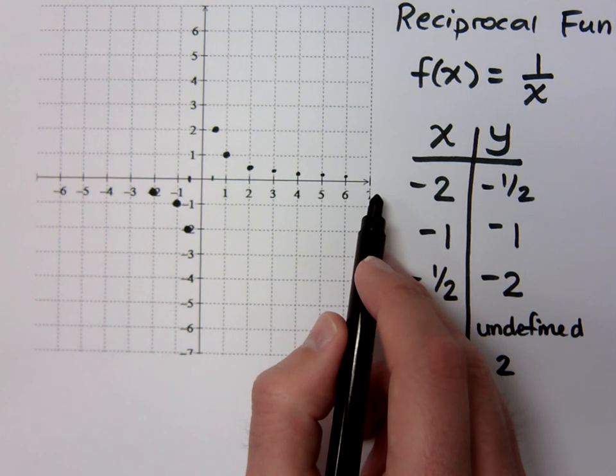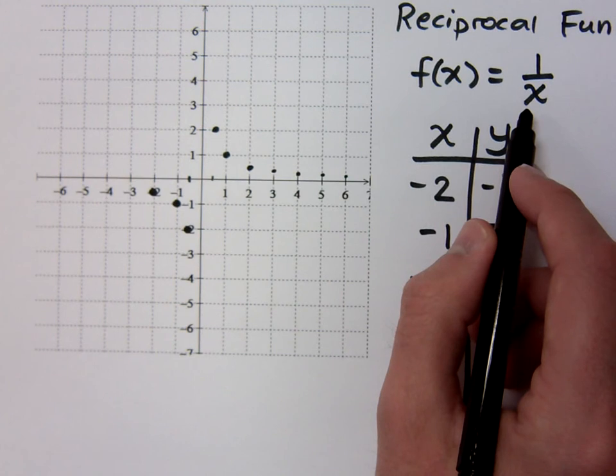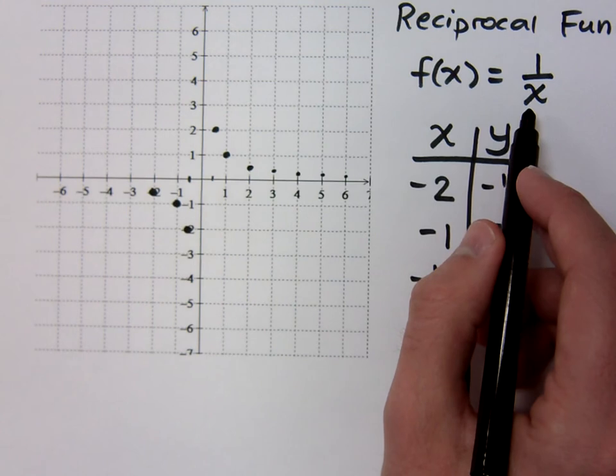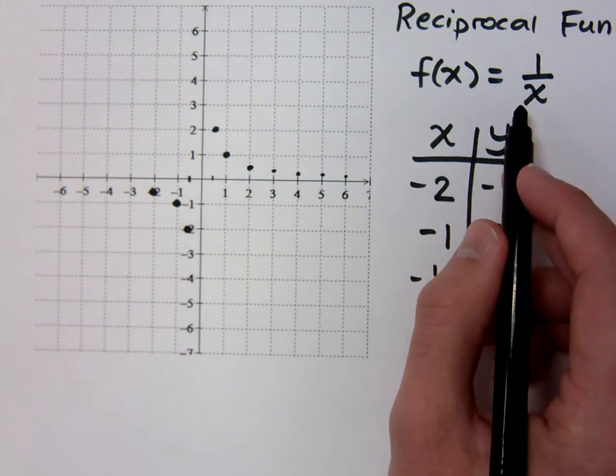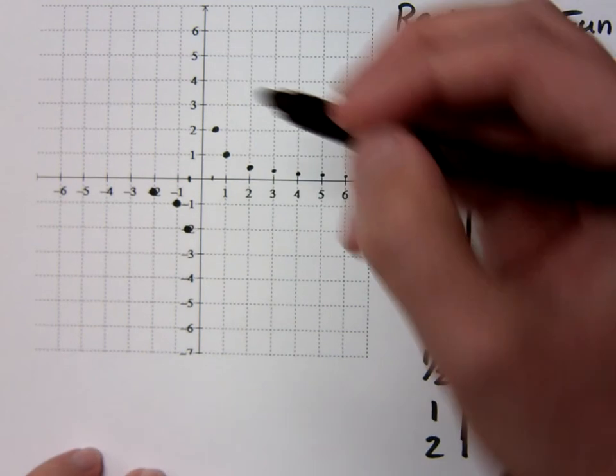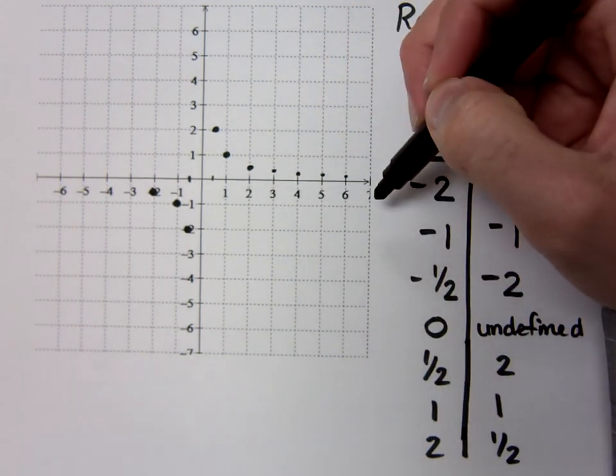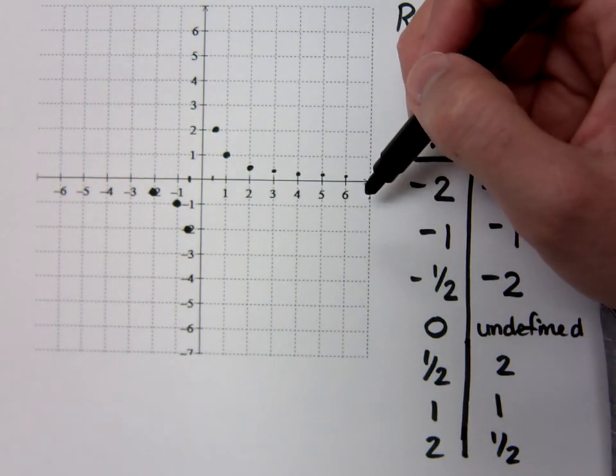Why not? You tell me what number I could plug into 1 over x that equals 0. It's never going to equal 0. If I keep plugging in larger and larger numbers, this guy keeps getting smaller and smaller and smaller, and his distance between the graph and the x-axis will get smaller. They'll get closer and closer. But will they ever equal each other? No.